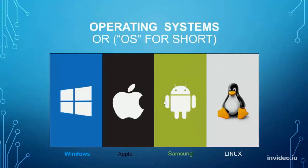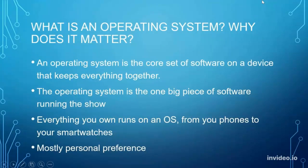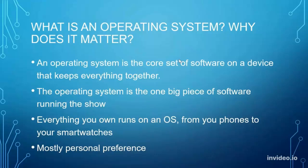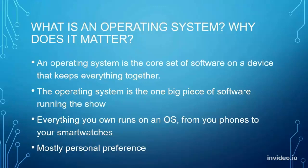Now we're going to go over operating systems for computers, which is basically like the brains of the computer — what computers run on. The most common is Windows, then Apple, Samsung, and then Linux. An operating system is the core set of software that keeps everything together — it's like the brain or the glue that keeps everything running. It's the one big piece of software running the show. Everything you own runs on an operating system, from a smart watch to your phone to your tablet. There's really no difference between them — it's just personal preference.